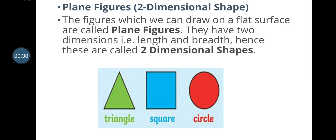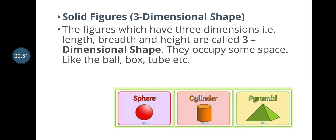In simpler words, plane figures are shapes which we can draw on a flat surface. For example, triangle, square, and circle are all two-dimensional shapes because they have only length and breadth and can be drawn on a piece of paper.